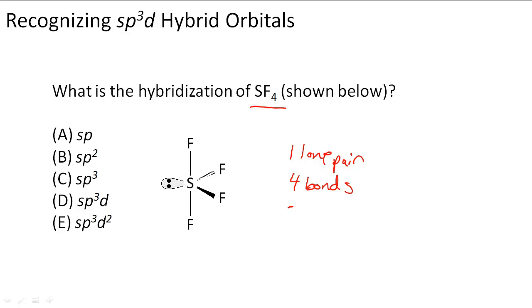Four bonds making a seesaw shape, and we know one family that's in a trigonal bipyramidal family shape. So this is a seesaw shape.